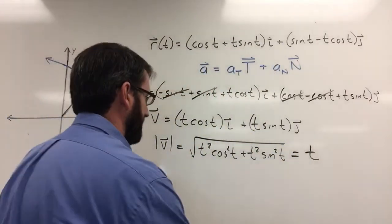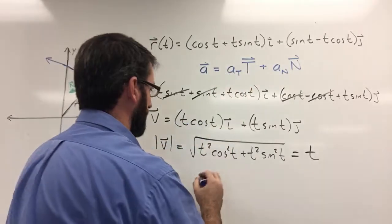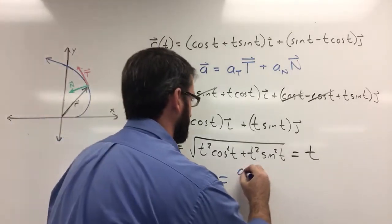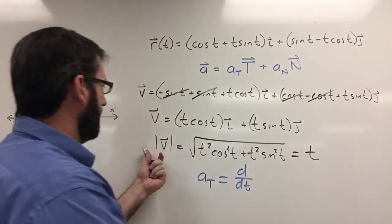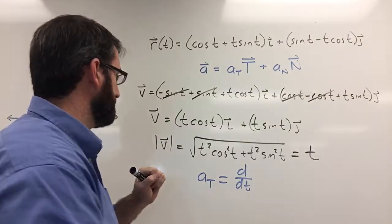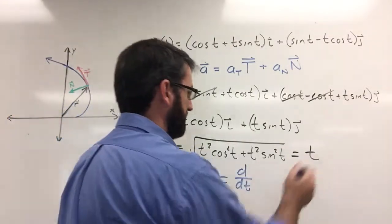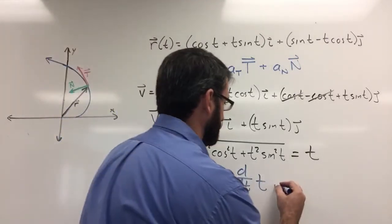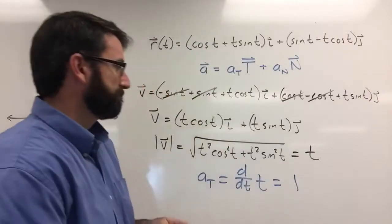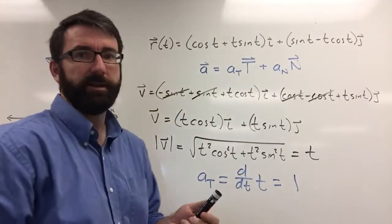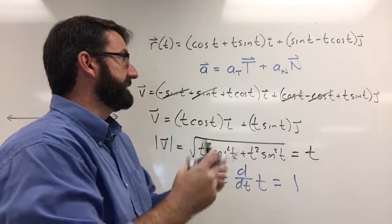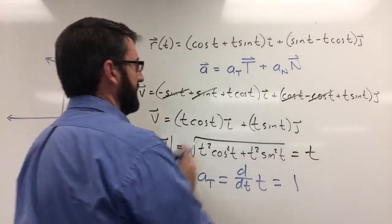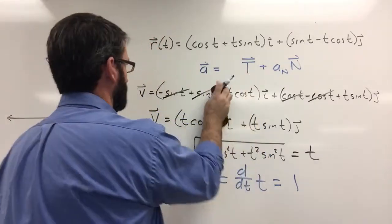Now we find our tangential component. A sub t equals the derivative with respect to t of the magnitude of the velocity vector, which we found to be t. So this is just d/dt of t, which is just 1. Our tangential scalar component of acceleration is 1.